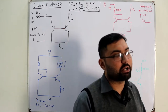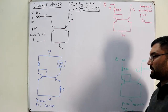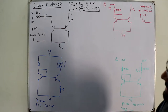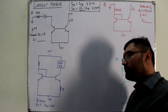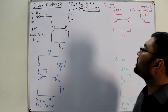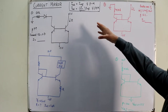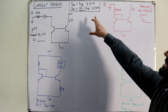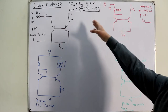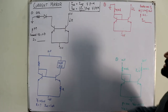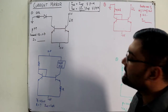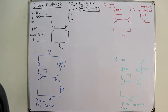Bismillahirrahmanirrahim, Assalamu Alaikum. This is Allah Khan, continuing and winding up the topic of current mirror circuits. The last video covered the basics — I_output equals I_reference when beta is infinity, and is multiplied by a beta factor when beta is finite. The current in one part of the circuit is controlled by the current in another part. Now let's go through some examples, which are previous year GATE questions for my Indian viewers.